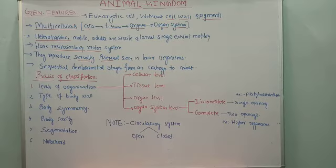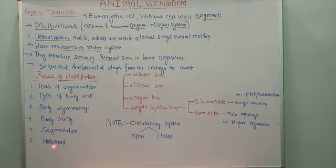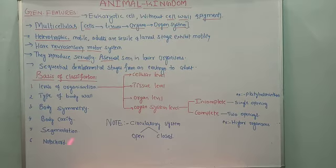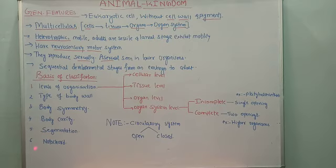Other bases include: the coelom type — pseudocoelom, acoelom, or true coelom. Next, segmentation — some organisms' bodies are divisible into a number of segments such as head, neck, thorax, and abdomen. Whether true segments or false segments are present is also used for classification. Lastly, advanced animals are classified based on the presence or absence of the notochord — the dorsal tubular nerve cord — and on this basis animals are classified into major groups.